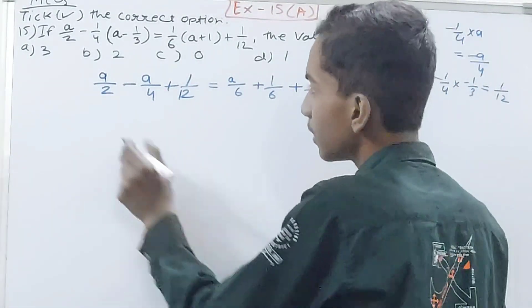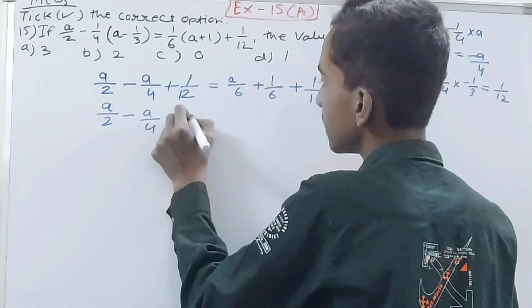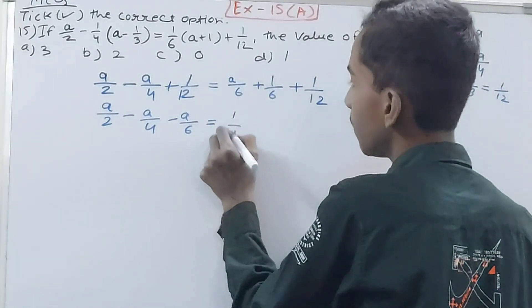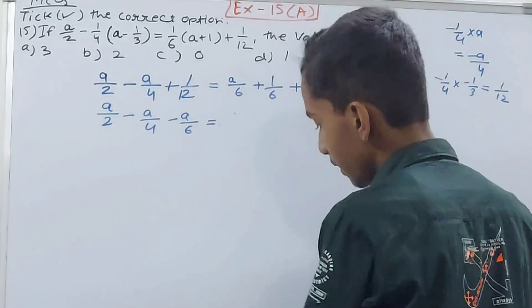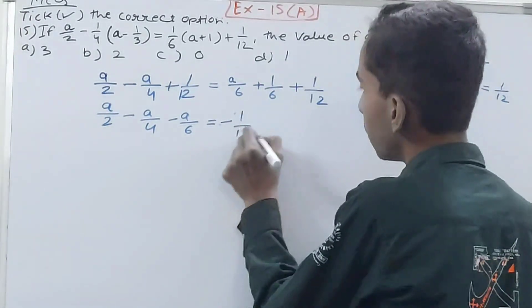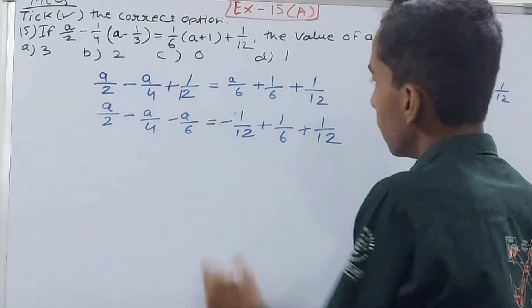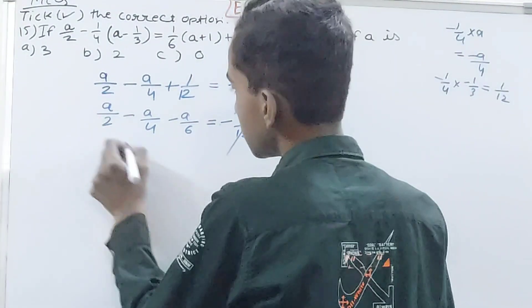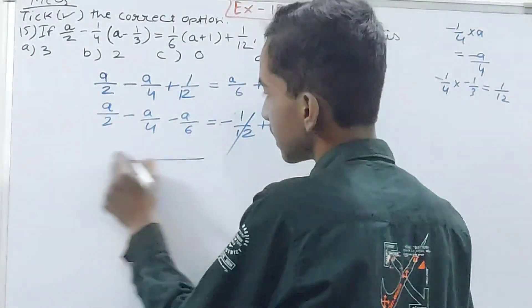What we're supposed to do now? Take the unknown quantities on one side, known quantities on the other. a/2 minus a/4 minus a/6 is equal to minus 1/12 plus 1/6 plus 1. The 1/12 cancelled, right?